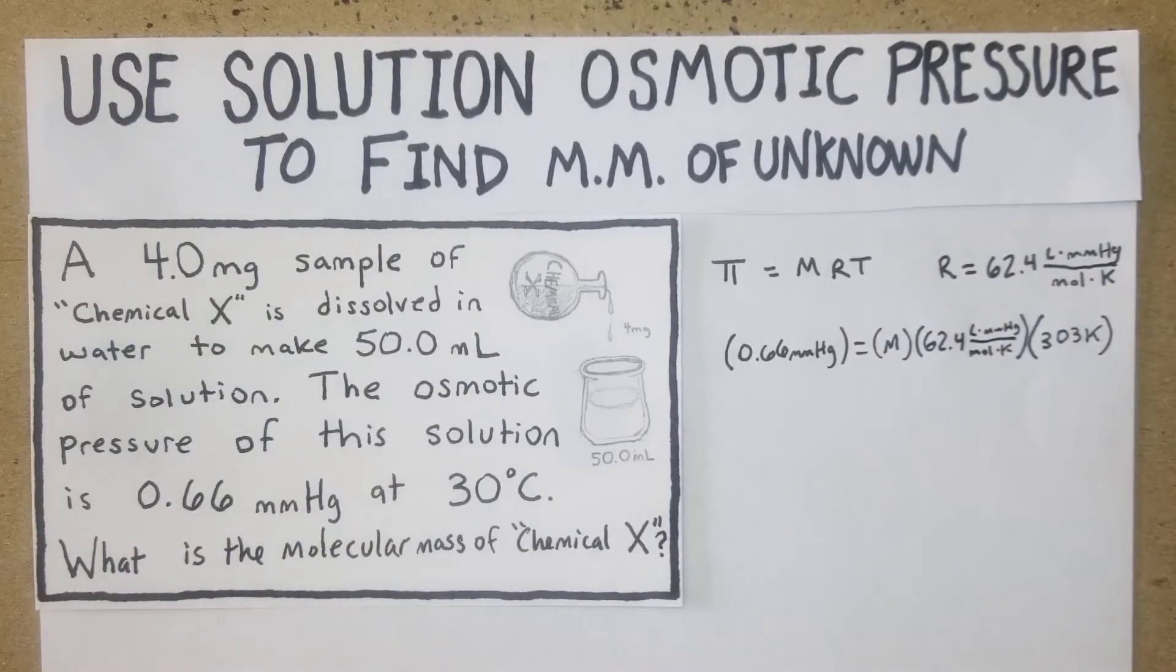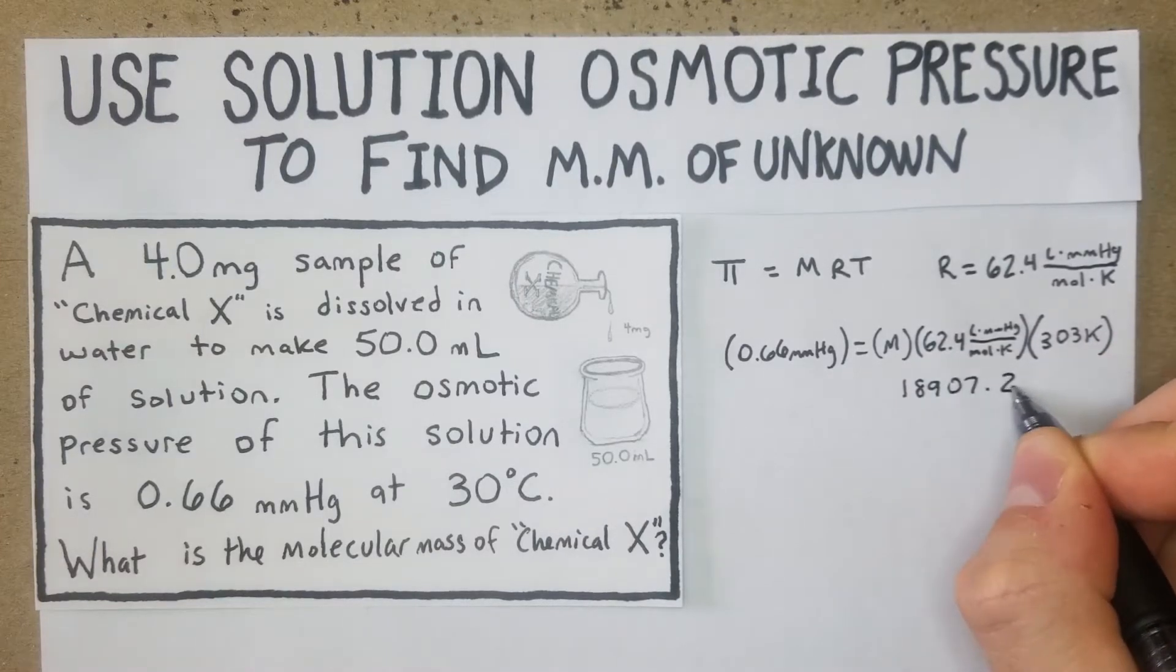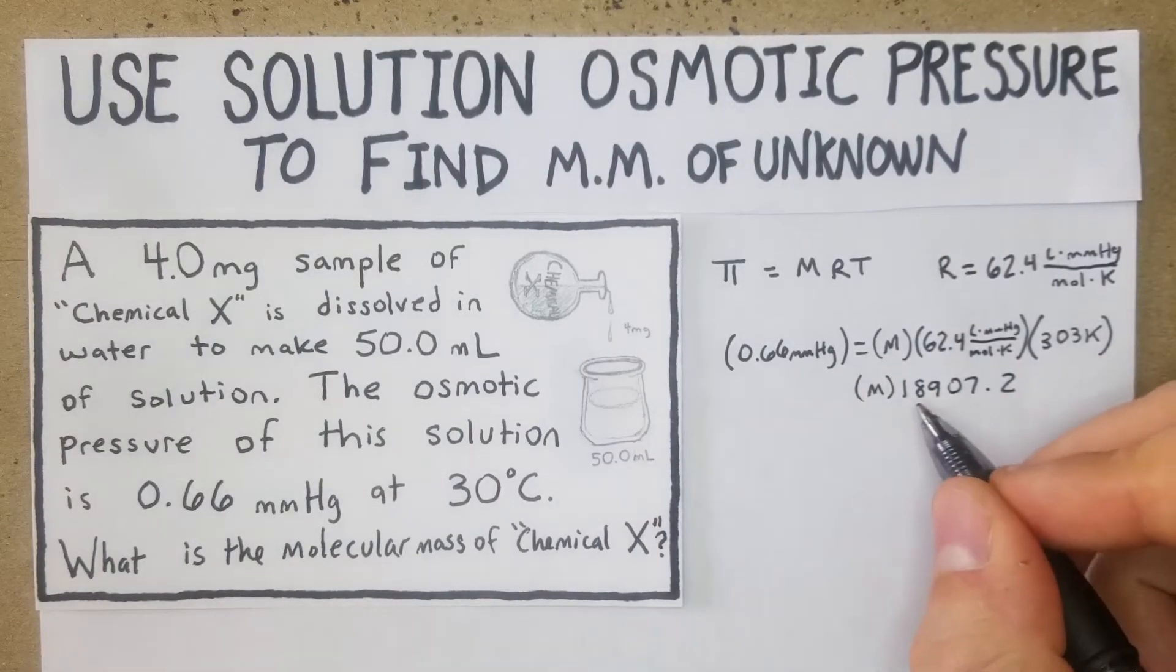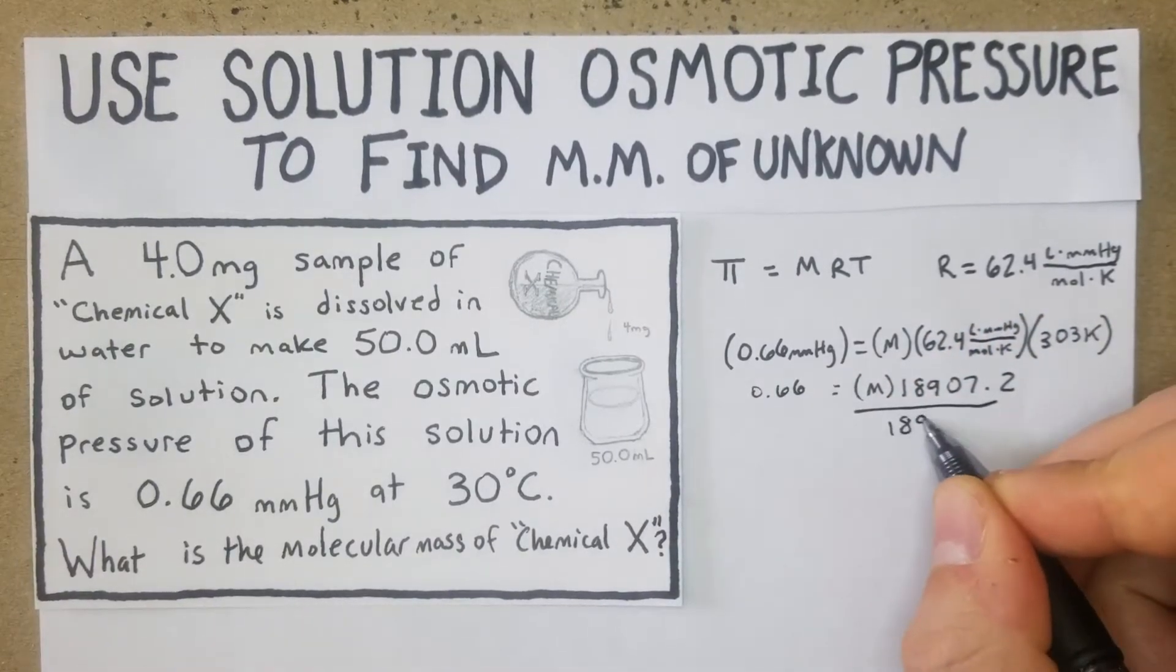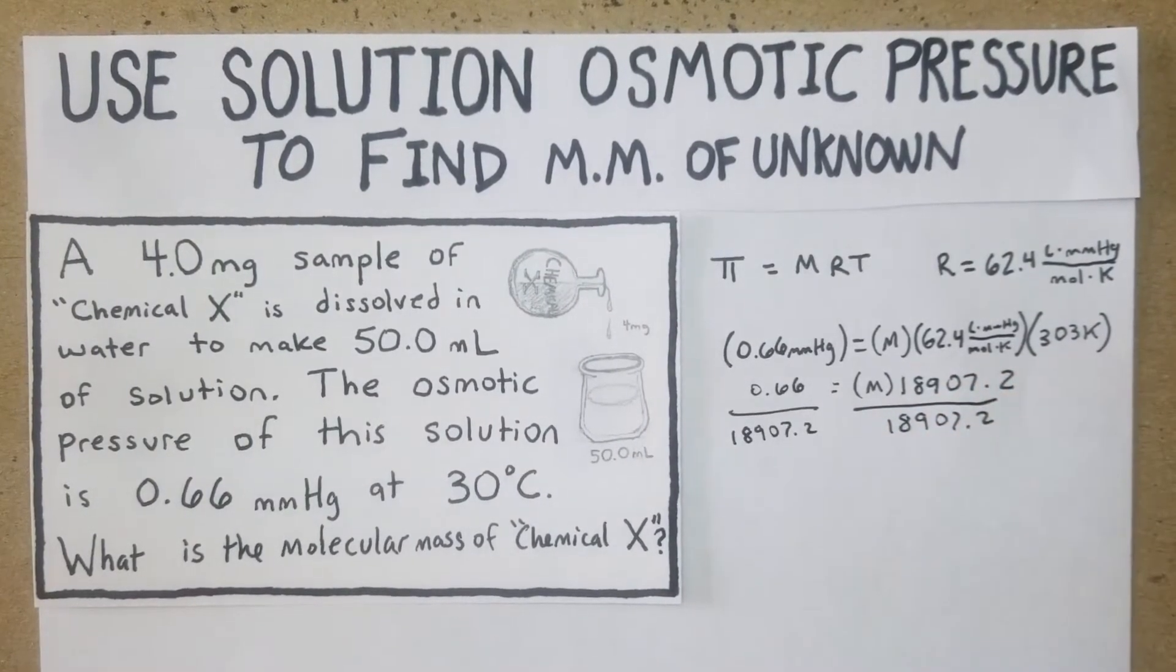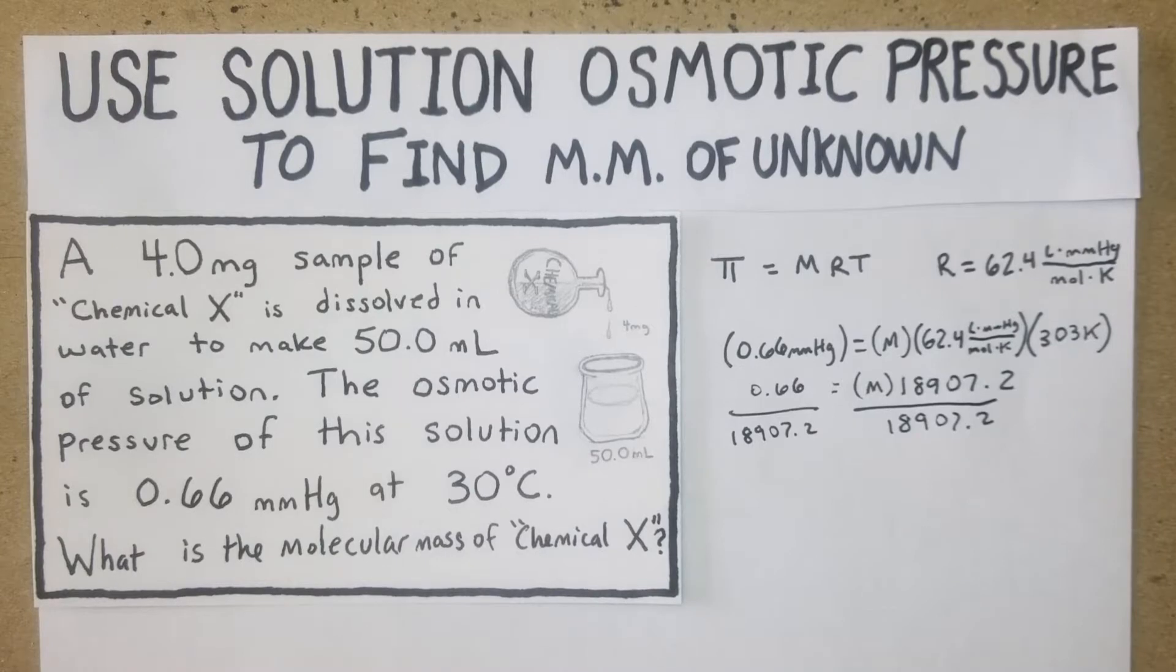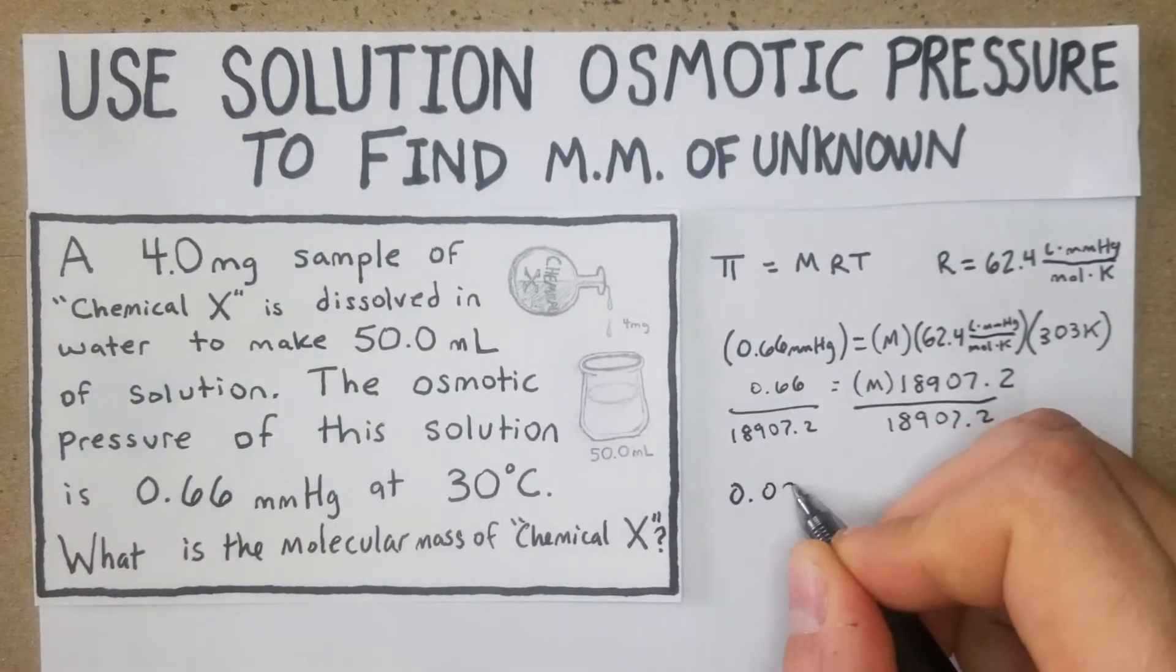62.4 times 303 and then we're going to get 18,907.2, and we're going to divide, and that's M. We're going to divide both sides by that 18,907.2.